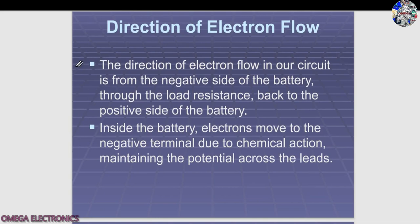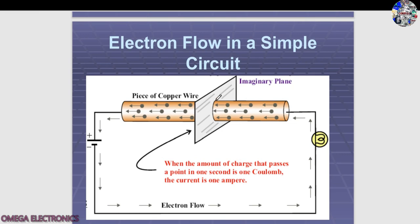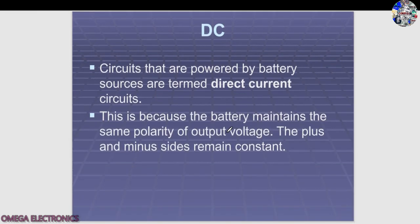The direction of electron flow in a circuit is from the negative side of the battery, through the load resistance, and back to the positive side. Conventional current flow is the opposite — from positive to negative. Inside the battery, electrons move to the negative terminal due to chemical action (electrochemistry), maintaining the potential across the leads.